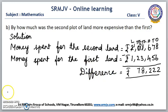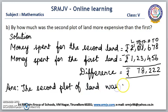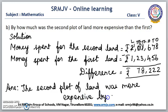So the answer: the second plot of land was more expensive by Rs. 93,222. Is it clear, children? Shall we go to the next one?